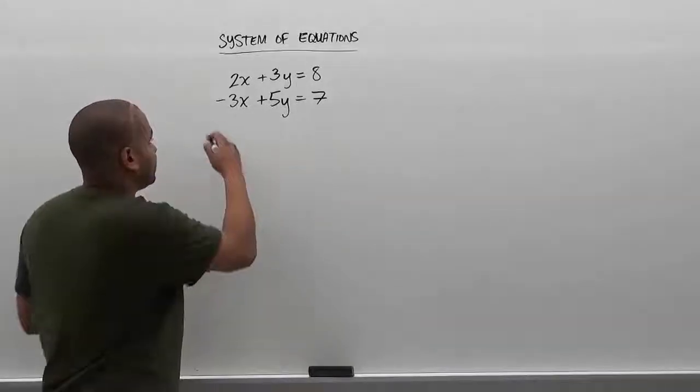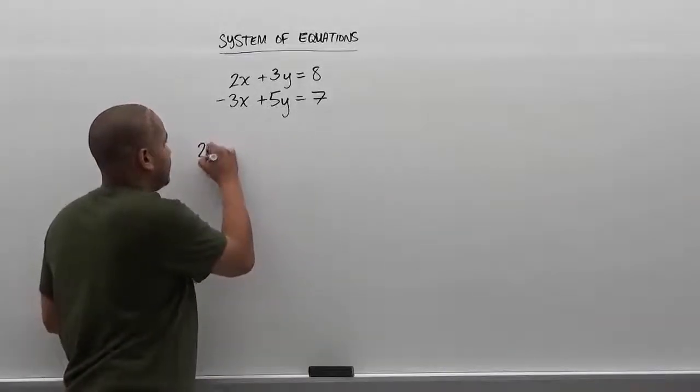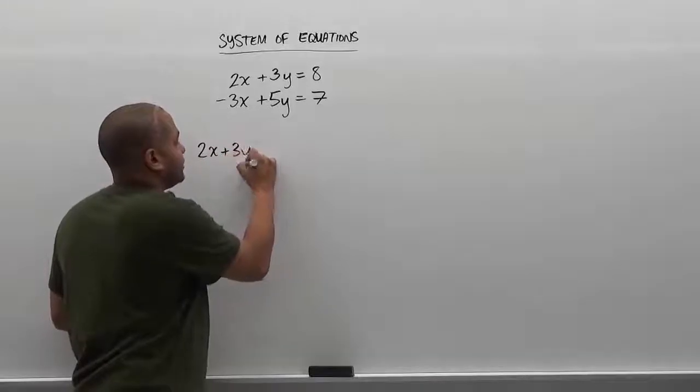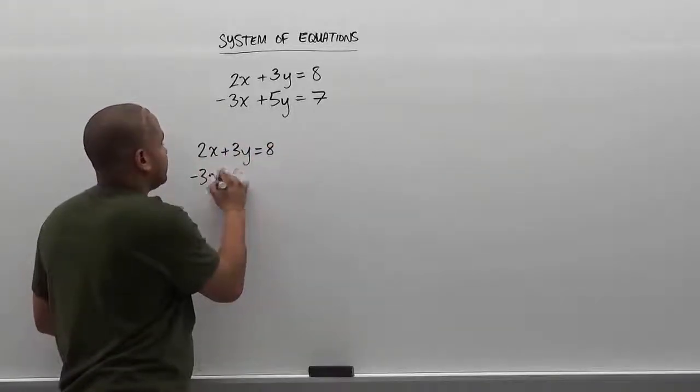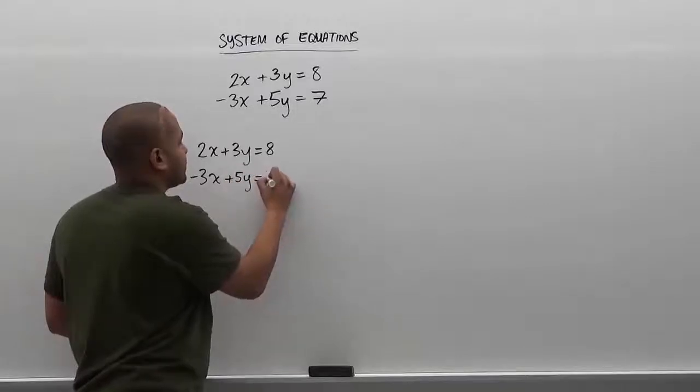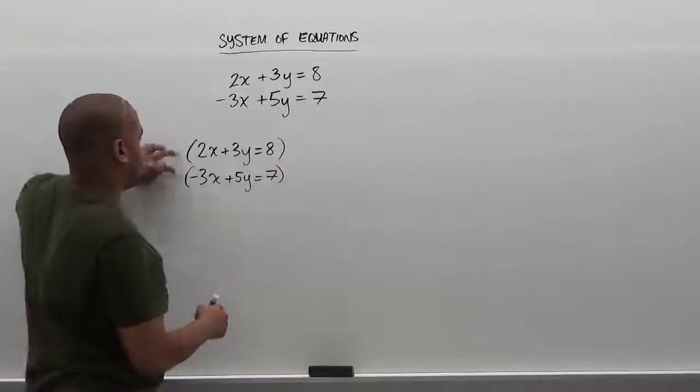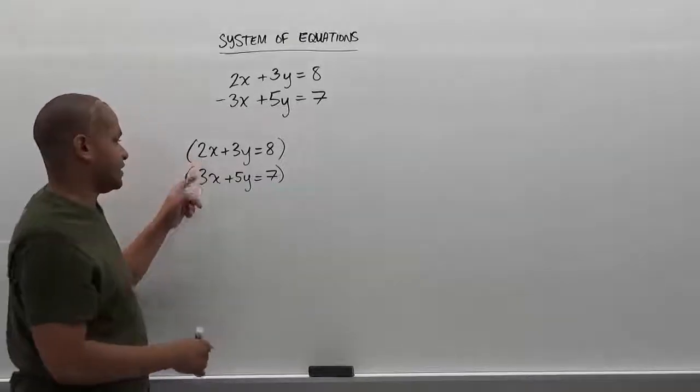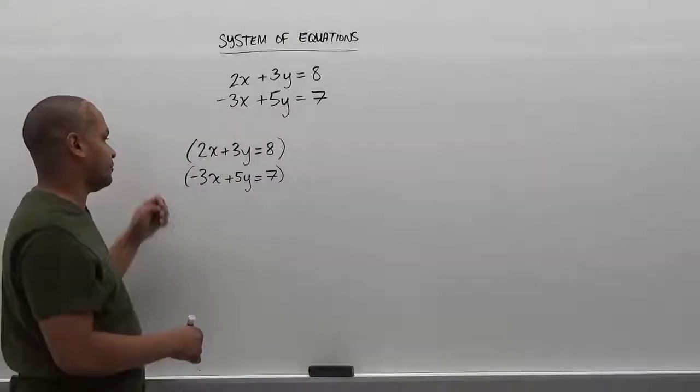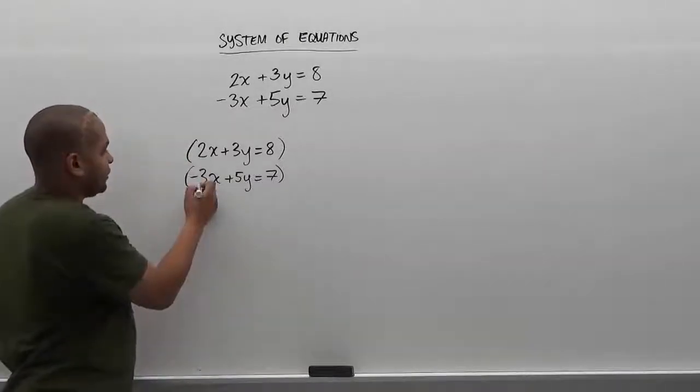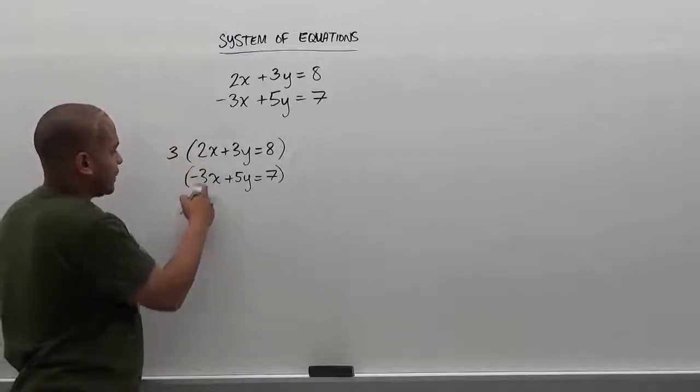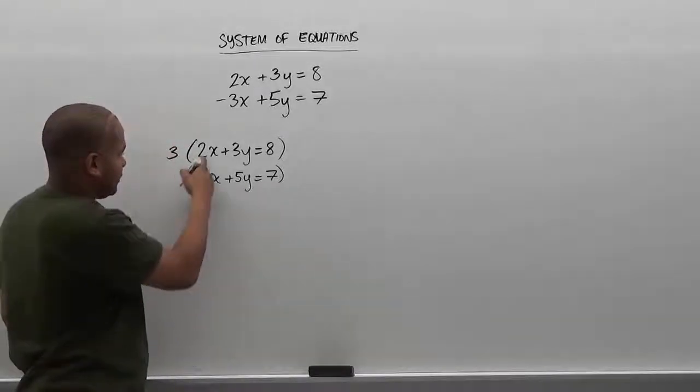So the first step is we're going to take the two equations, 2x plus 3y equals 8 and negative 3x plus 5y equals 7, and we're going to augment them. To augment them, we're going to multiply by the multiplication factor which makes these numbers opposite but the same. Here we're going to use the 3 to make the common multiple of 6 and down here we're going to use the 2.